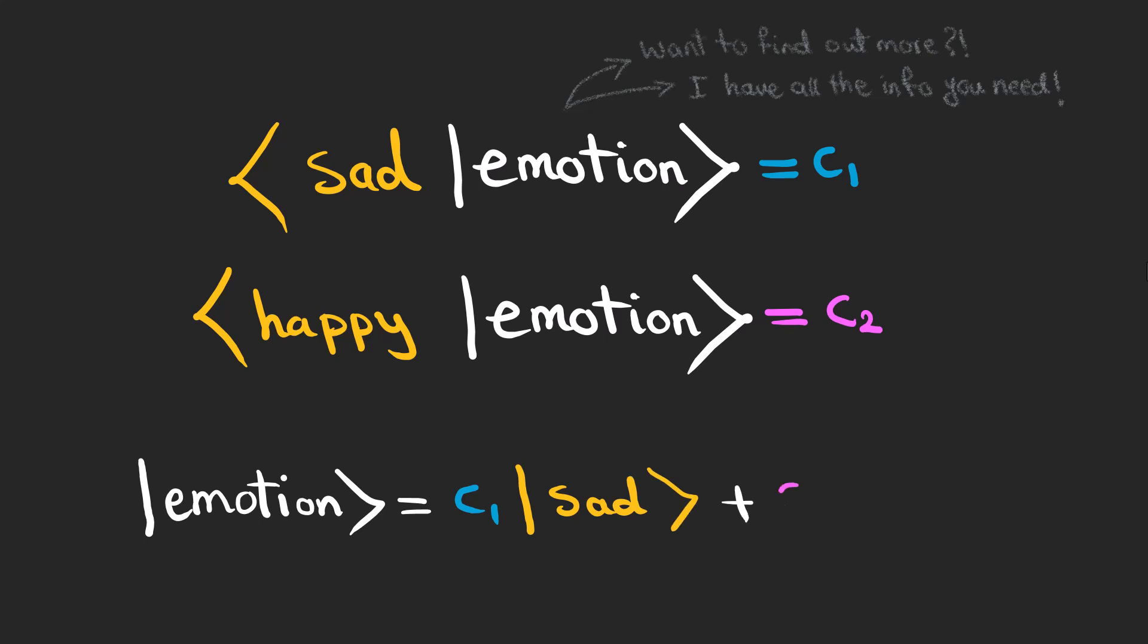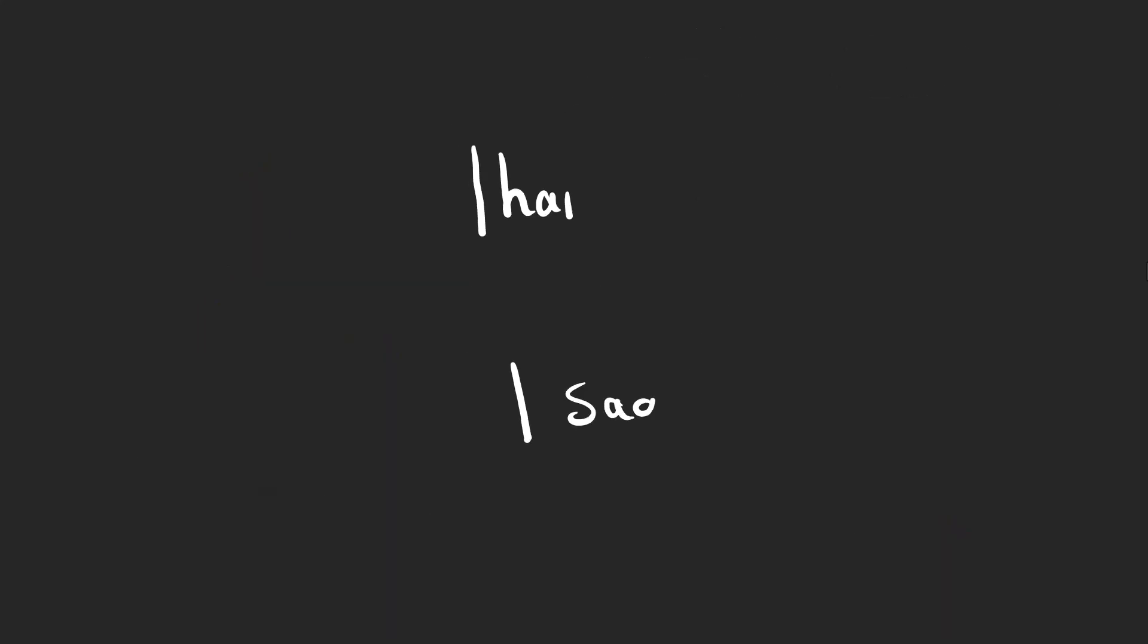We can do the same thing for happiness to figure out the pink part of the emotion. Now we have more information about our emotional state which is a superposition of two states, sad and happy. Keep in mind that sadness and happiness don't overlap and they don't share anything, so we can say these combinations are zero.